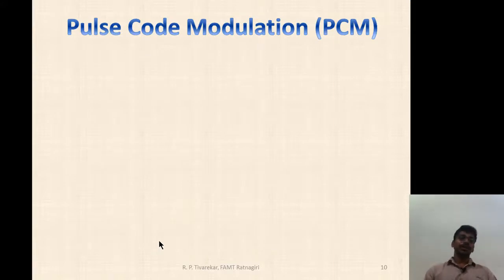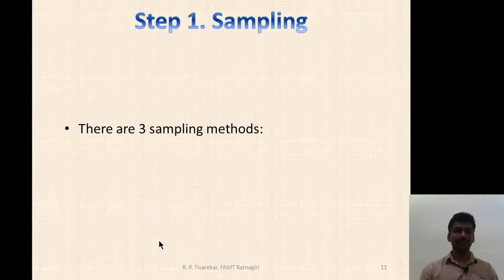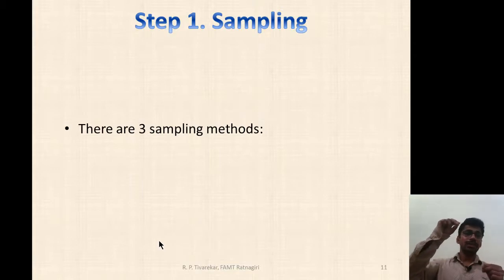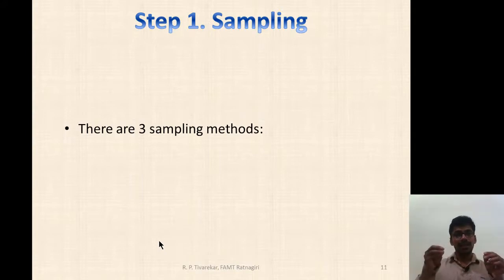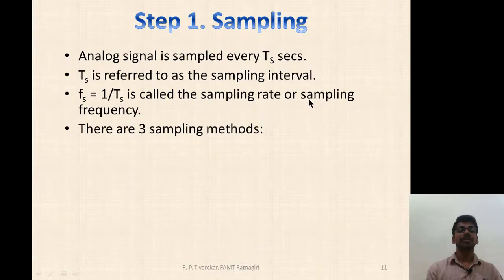We will now learn about Pulse Code Modulation as the next topic. In PCM, we discuss three steps: sampling, quantization, and binary encoding. The first step, sampling, means getting a sample from the original signal. If the original signal is continuous in amplitude, it will have infinite amplitude levels. We obtain amplitudes only at certain intervals of time — those amplitudes are called samples. We obtain samples after every T_s seconds, where T_s is called the sampling interval, and its inverse is called the sampling rate or sampling frequency.